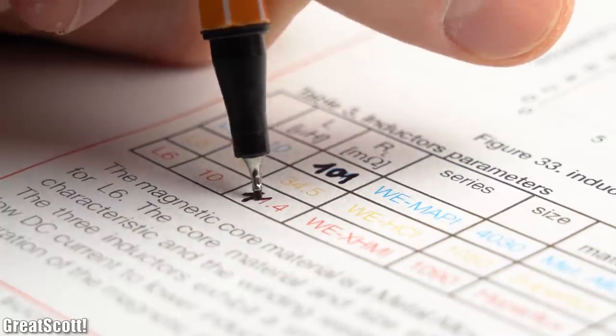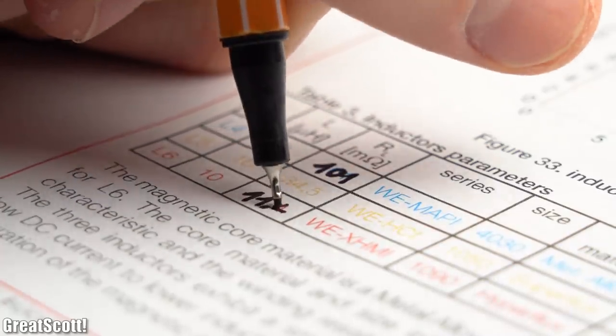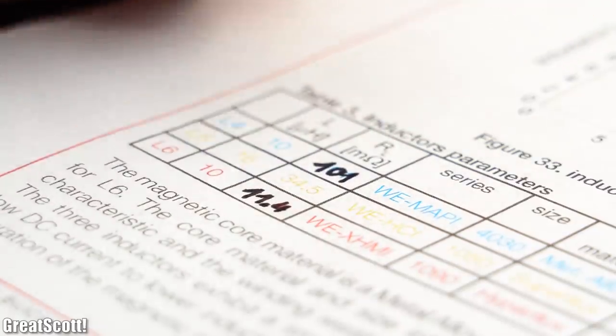Practically speaking that means that our smaller coil features an almost nine times bigger resistance in comparison to the bigger coil.